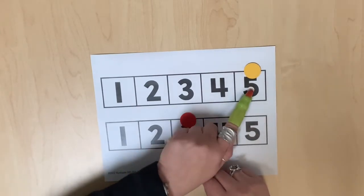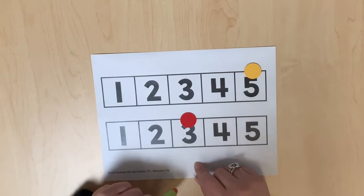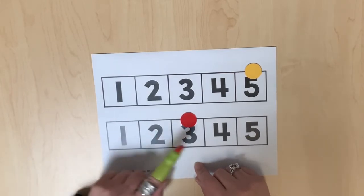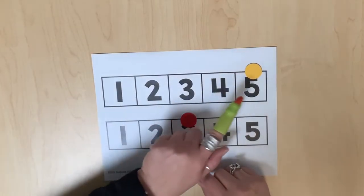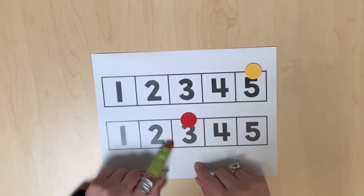Three is less than five because fewer spaces were counted on the number path. One, two, three. One, two, three, four, five. Three is less than five.